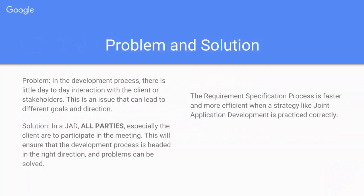One of the problems with common work meetings is that as you begin to develop and get deep into code on a product, you start to lose track of the main goal and direction of the product. Stakeholders do very well at keeping in mind the big picture and how they want things done, so a JAD is a perfect solution. It has stakeholders present to ensure the development process is headed in the right direction and that problems can be solved.